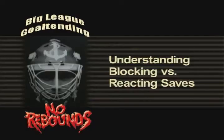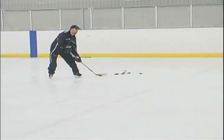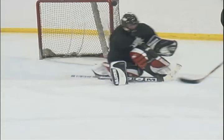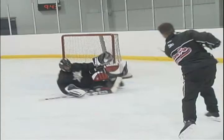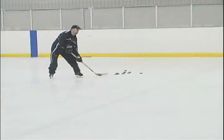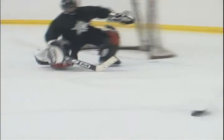Every game situation will require a save that is either blocking or reactive in nature. The blocking save is a save a goaltender makes when they place a closed wall in front of a shot that they will not have time to react to. This save could be a paddle down, closed half pad, two-pad slide, or a variation of these. A hard backdoor pass one-timer or a full-out slap shot from 20 feet are examples of times when a goalie will not have time to react.